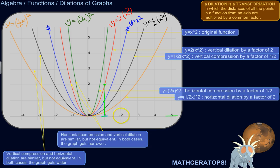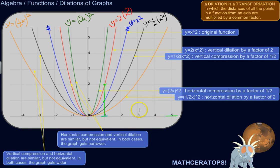Same thing at x equals 2. On the original function, when x is 2, y is 4. But on the vertically dilated function, I would multiply that distance of 4 by 2. So the distance from the x-axis to the point on this red parabola would be 8 units. Which makes sense — 2 squared is 4, times 2 is 8. So it would be 8 units away from the x-axis. That's a vertical dilation by a factor of 2: you're taking the distance of all the points from the x-axis and multiplying those distances by 2.